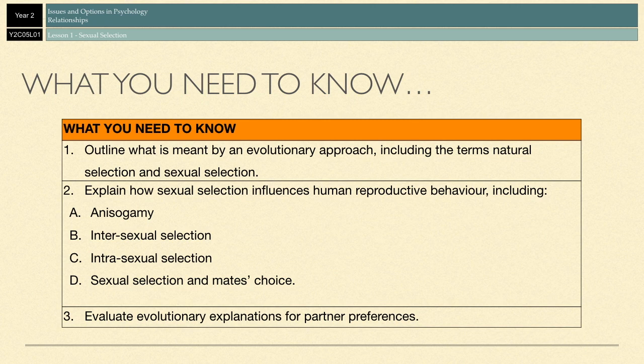Using all of those terms, you're going to be able to explain human mate preferences. And then to finish it all off, you're going to be able to evaluate sexual selection and also evolutionary explanations for partner preference.